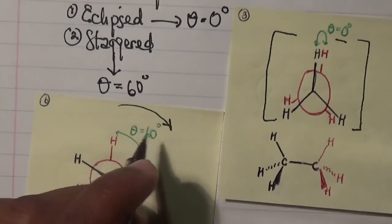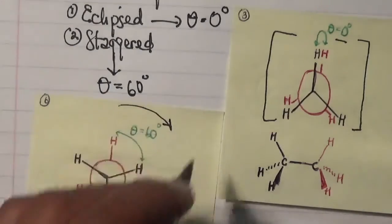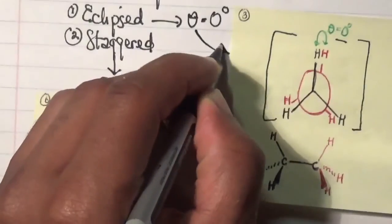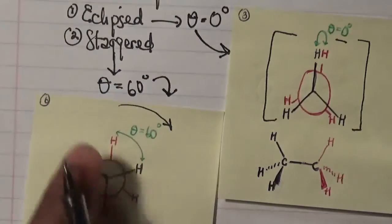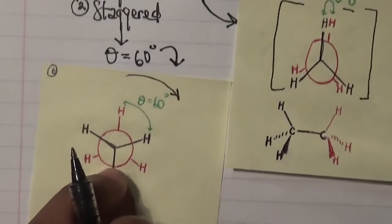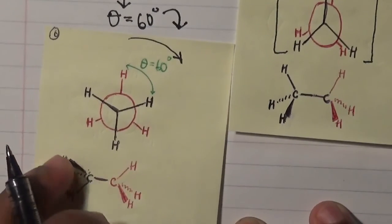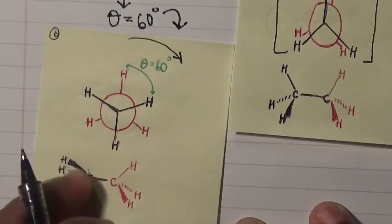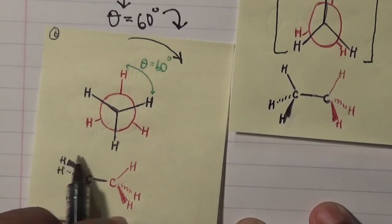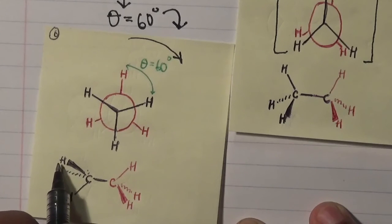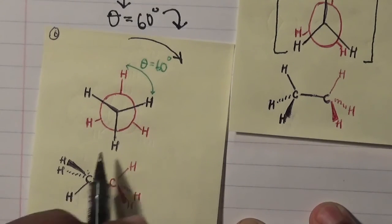And once you change this staggered form, let me just put this arrow here, and this is for that. And this is being transformed in a diagram such as this. So in here we have the front and back hydrogen carbon bonds versus one of the hydrogen bonds pointing downwards, if you see over here.